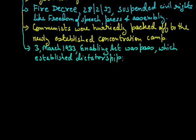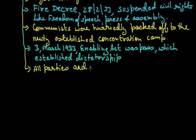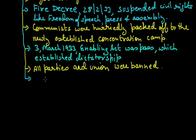On 3rd March 1933, Hitler passed an ordinance known as the Enabling Act. By this Enabling Act, dictatorship was established in Germany. Hitler became the chief head of Germany and removed Hindenburg from the post of President. All parties and unions were banned in Germany. Now there was only one party and one union, and that was Nazi.